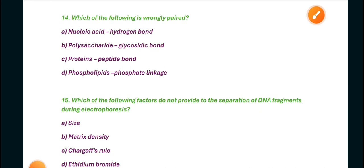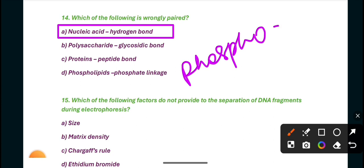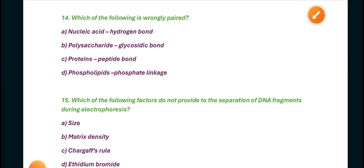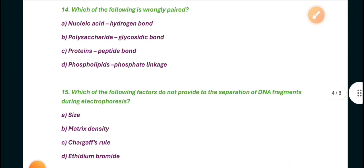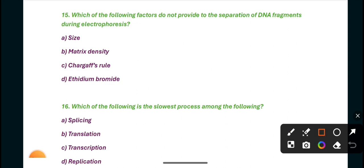Question 14: Which of the following is wrongly paired? Nucleic acid-hydrogen bond. A is the right answer because nucleic acids are DNA and RNA, and in DNA and RNA there is a phosphodiester bond, not hydrogen bond. Next is which of the following factors do not provide for the separation of DNA fragments during electrophoresis? Then D is the right answer, ethidium bromide.